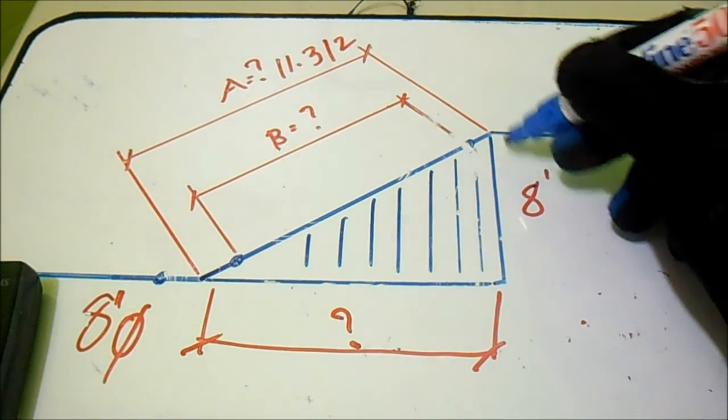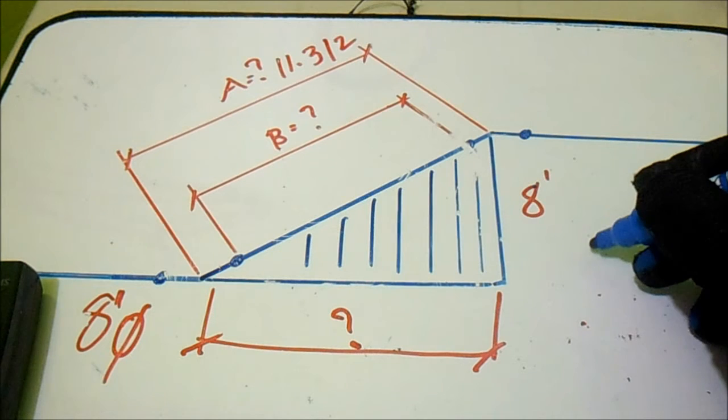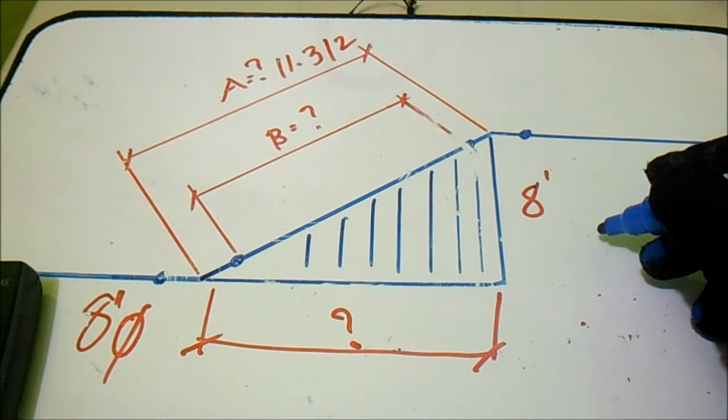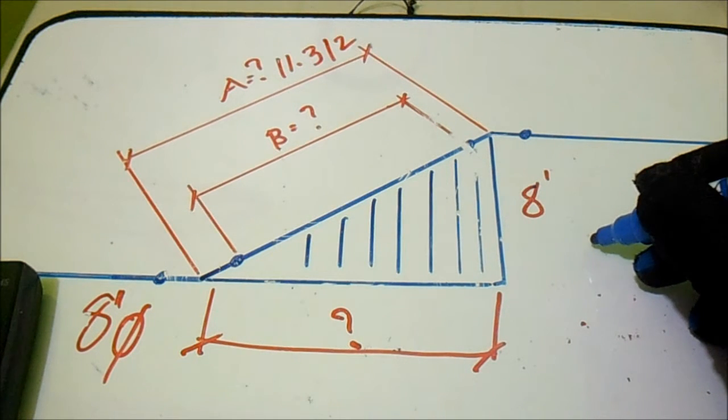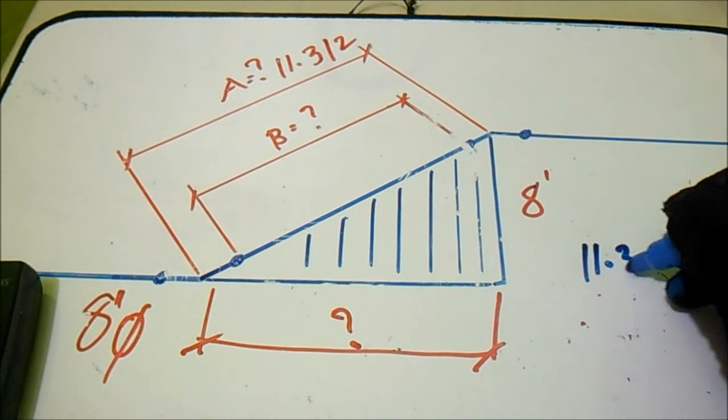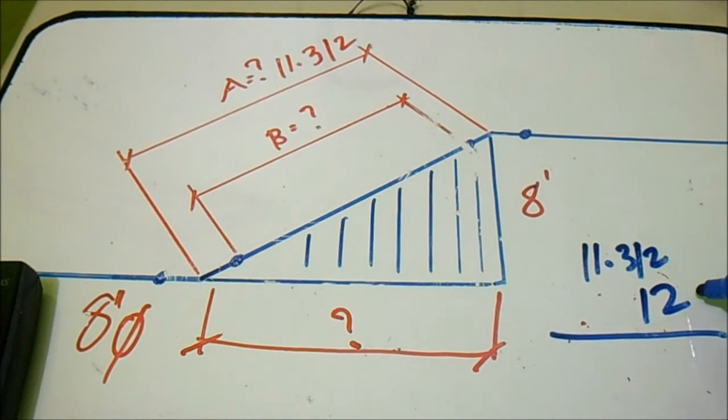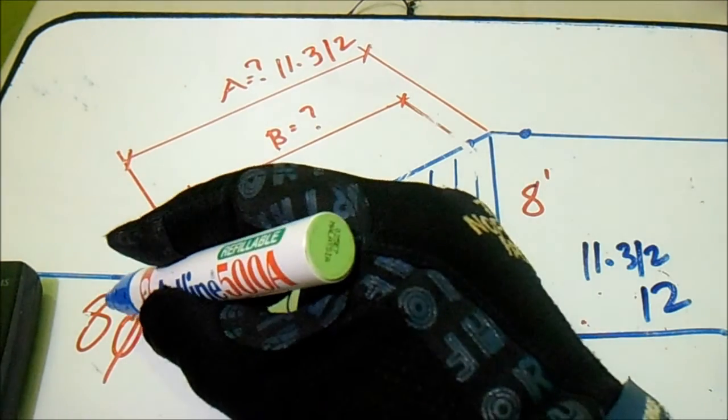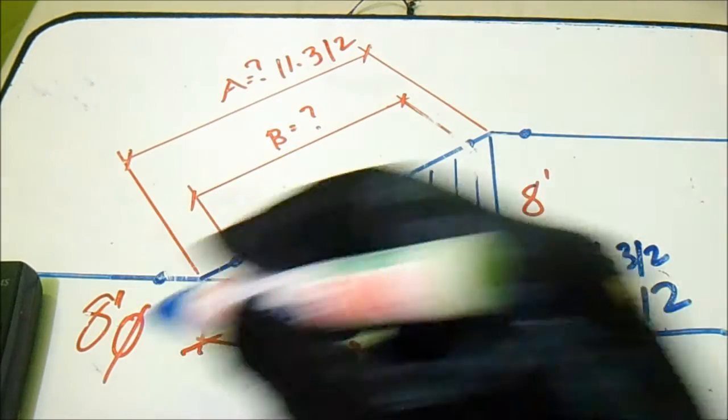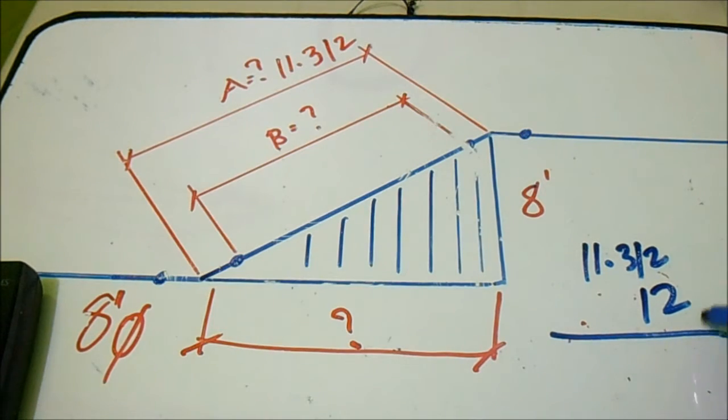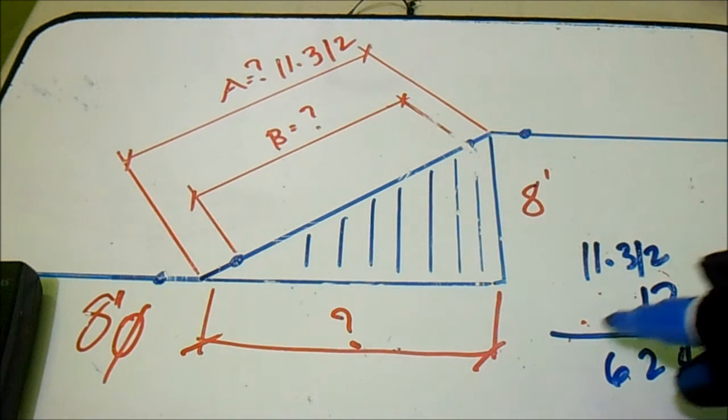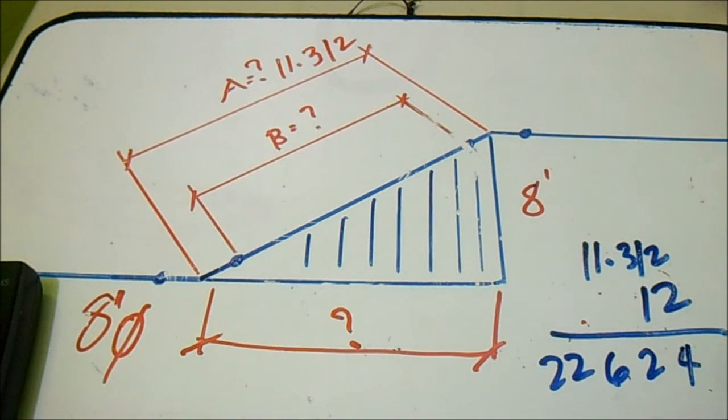Our height here is 8 feet, so we will convert this. 11.312 multiply by 12 to convert it to inches. So 4, 2, 6, 2, 2 and then 1, 2, 1, 3, 1, 1, 4, 4...